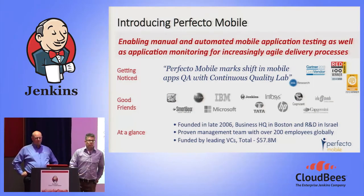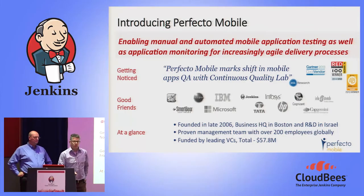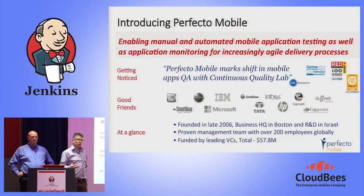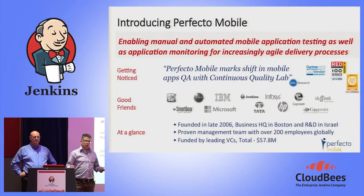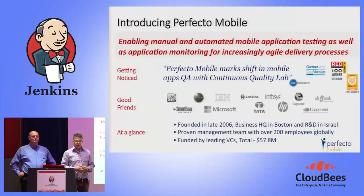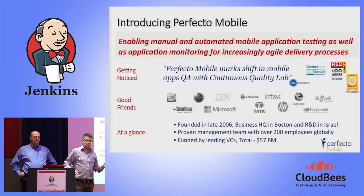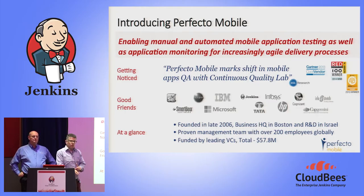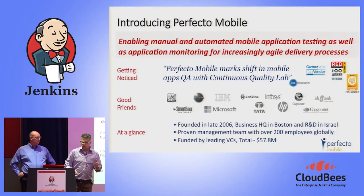Perfecto Mobile is the leader today in continuous quality. We offer a continuous quality lab, giving our customers the ability to remotely access real devices — smartphones, tablets, smartwatches — from anywhere in the world, and perform continuous integration, development, testing, manual performance testing, and monitoring against these devices. We integrate with many leading test frameworks such as HP UFT, Selenium, Calabash, and soon Appium, and we have a Jenkins plugin available on the Jenkins Wiki page.